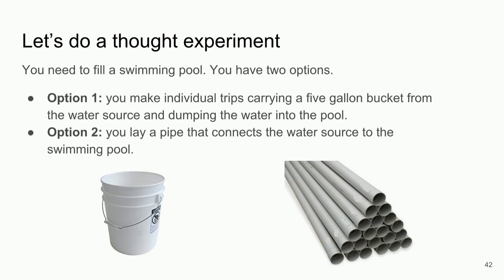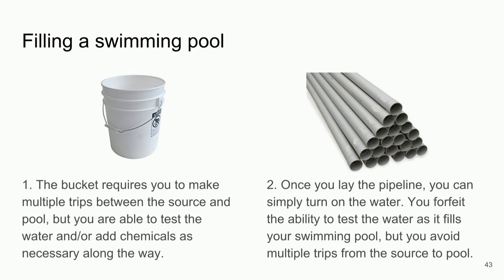Option one, the five-gallon bucket, requires multiple trips. But along those trips you could test — like the chemical composition of your data — before you dump it in. You could add chlorine to the water along the way. The pipeline requires a lot of upfront investment in infrastructure and you aren't able to check the water along the way, but once it's built you just turn on the water and it gets into the pool.